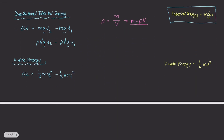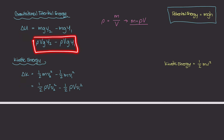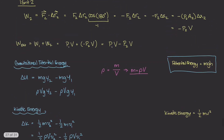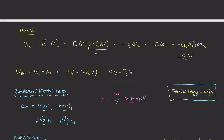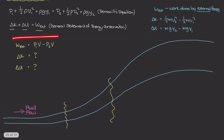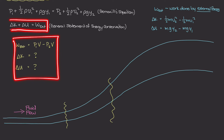Just like we did for the gravitational potential energy, we use the definition of mass density to rewrite this. Delta-k becomes one-half·rho·V·v2² minus one-half·rho·V·v1², where V is the volume and lowercase v is velocity. So we've now figured out delta-k and delta-u, and we also know the external work done on the system by the external forces.